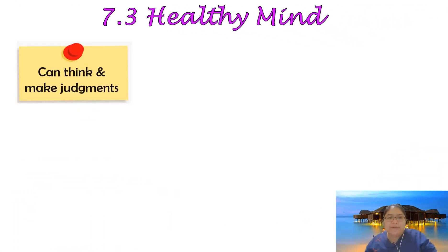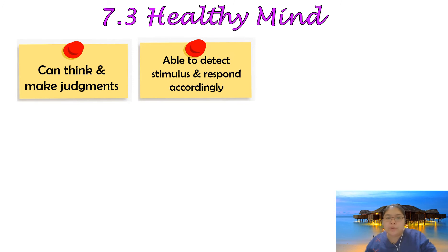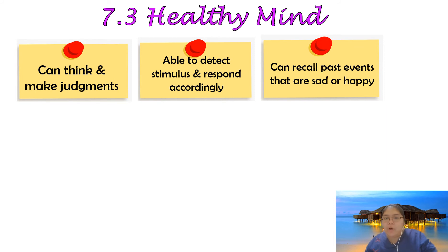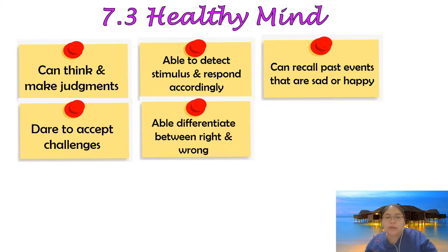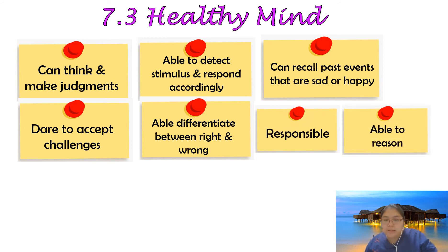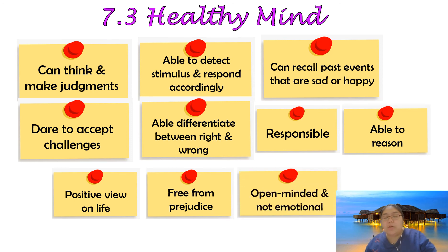A healthy mind involves: being able to think and make judgments — knowing right from wrong; detecting stimuli and responding accordingly; recalling past events whether sad or happy; accepting challenges; differentiating right from wrong; being responsible; giving reasons; having a positive view on life; being free from prejudice; and being open-minded and not emotional.